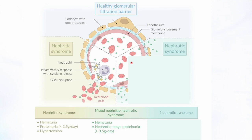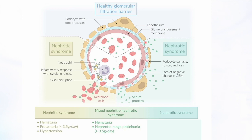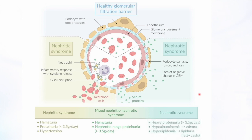In nephrotic syndrome, the problem is not inflammation. It's mainly damage to the barrier that removes the negative charge — the podocytes are damaged. The barrier itself is anatomically intact, unlike in nephritic syndrome. But since we've lost the negative charge, proteins easily escape. Those green dots represent proteins — significant proteinuria results, including albumin, immunoglobulins, and antithrombin 3.